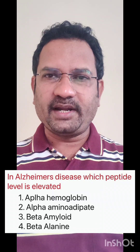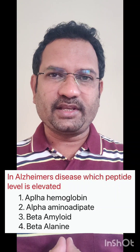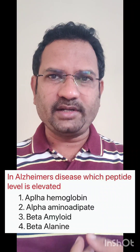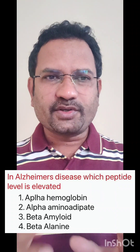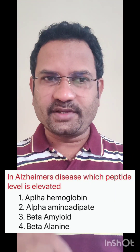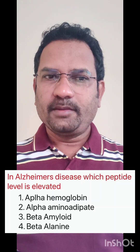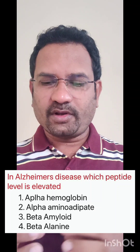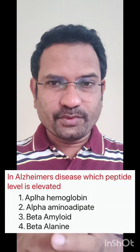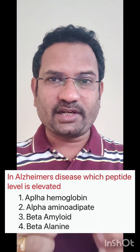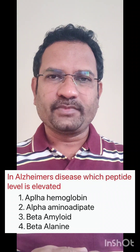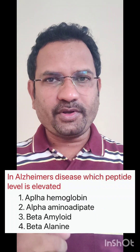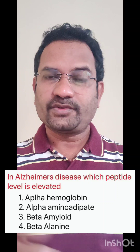In Alzheimer's disease, which peptide level is elevated? Alzheimer's is a neurological disease wherein the major characteristic is amnesia — loss of memory — and certain neuronal loss. The options given are alpha hemoglobin, alpha amino adipate, and beta amyloid. The answer is beta amyloid peptide. What happens is all these beta amyloid peptides come together and form aggregates, causing disruption of cell-to-cell communication. When this happens, the neuronal immunological system is activated and attacks these peptides, and in that process neurons also get destructed. That is what results in Alzheimer's.